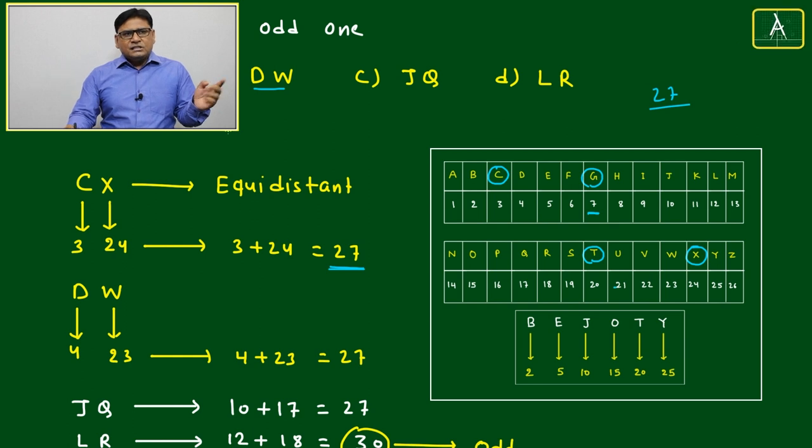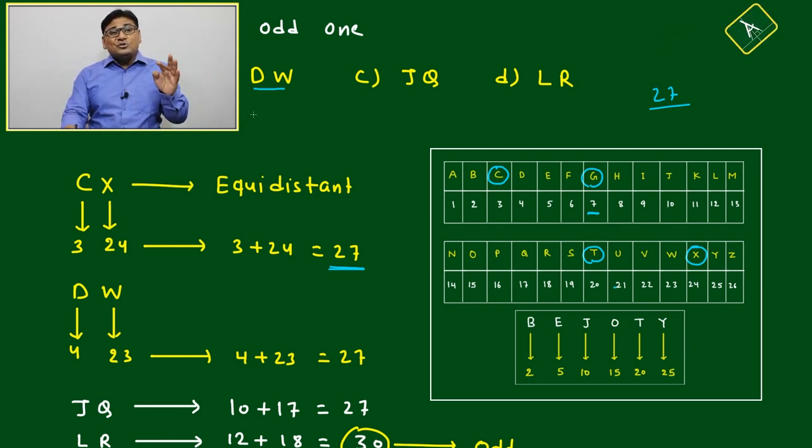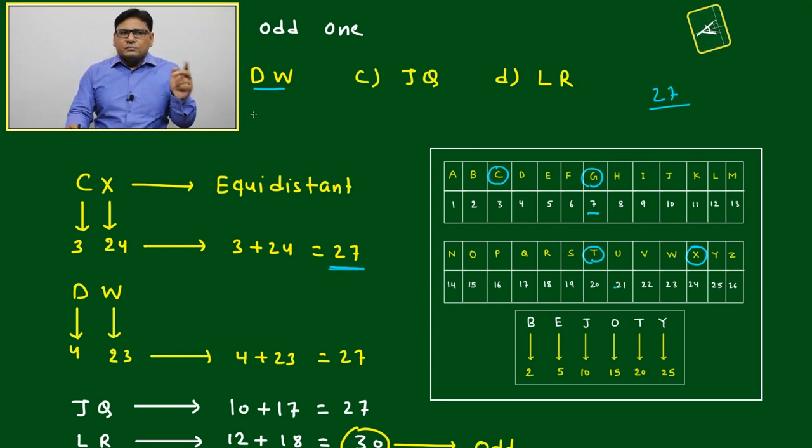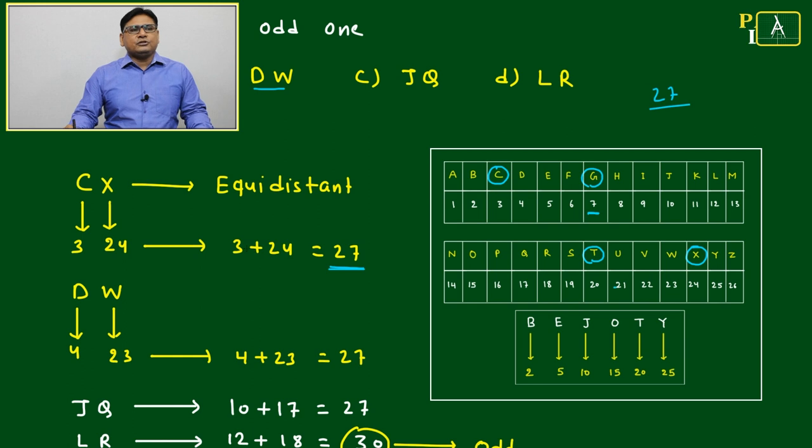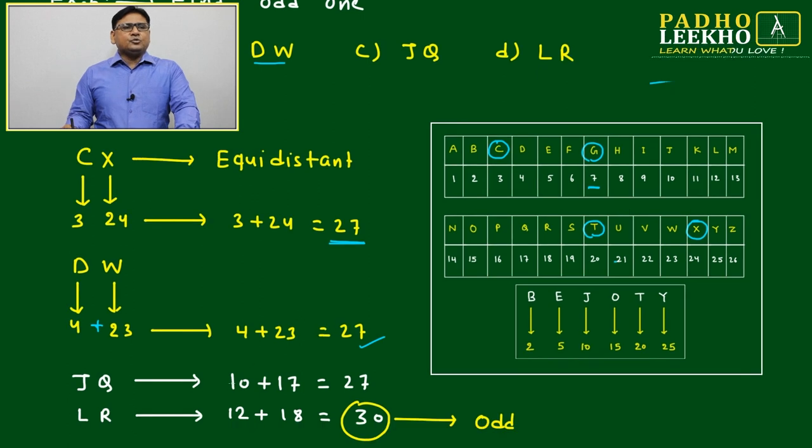Once we understood, just check if sum is coming 27 or not. No need to check if it's equidistant or not. D and W: 4 plus 23 equals 27, perfectly fine. J and Q: J is 10, Q is 17, also perfectly fine.